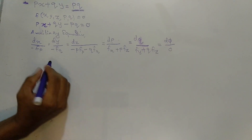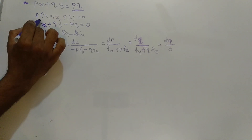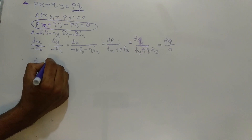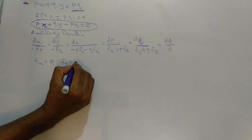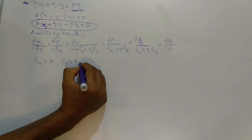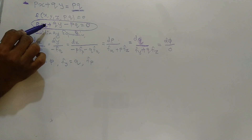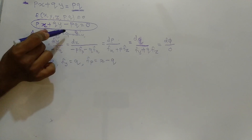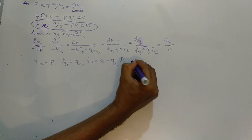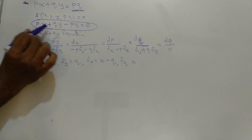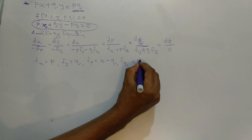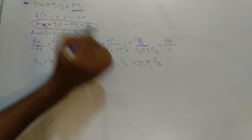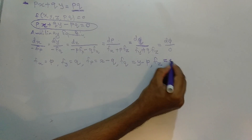We find the partial derivatives of f = px + qy − pq = 0. fx = p, fy = q, fz = 0 since there is no z term. fp = x minus q (derivative with respect to p, treating q and x as constants). fq = y minus p (derivative with respect to q, since derivative of px with respect to q is 0).